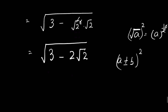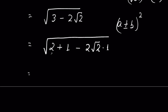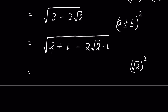Now let's try. We can write 3 as 2 plus 1, so we have 2 plus 1 minus 2 times square root of 2, and we can multiply by 1 without any difference, all under square root. Now 2 we can write as square root of 2 squared, and 1 as 1 squared, and there won't be any difference.